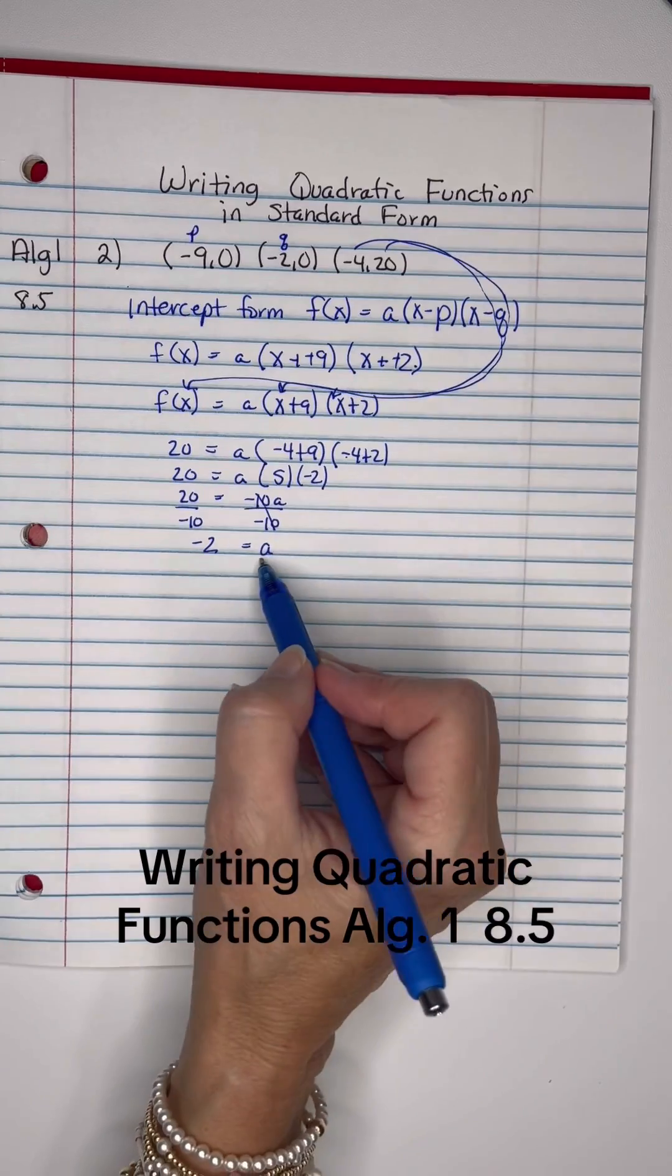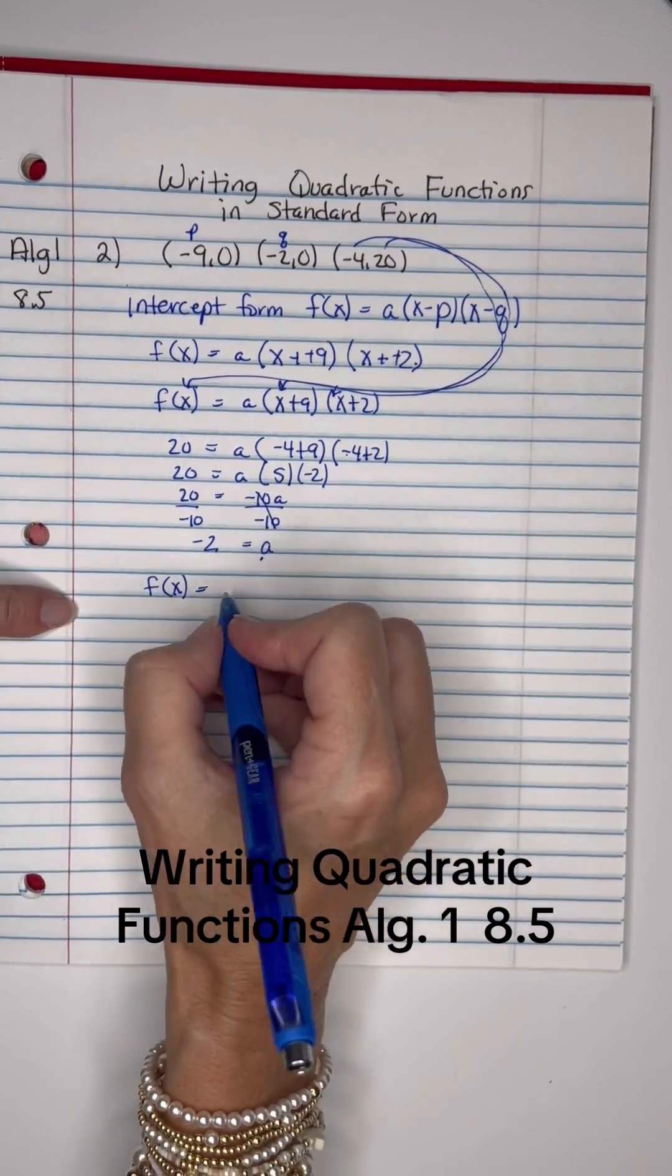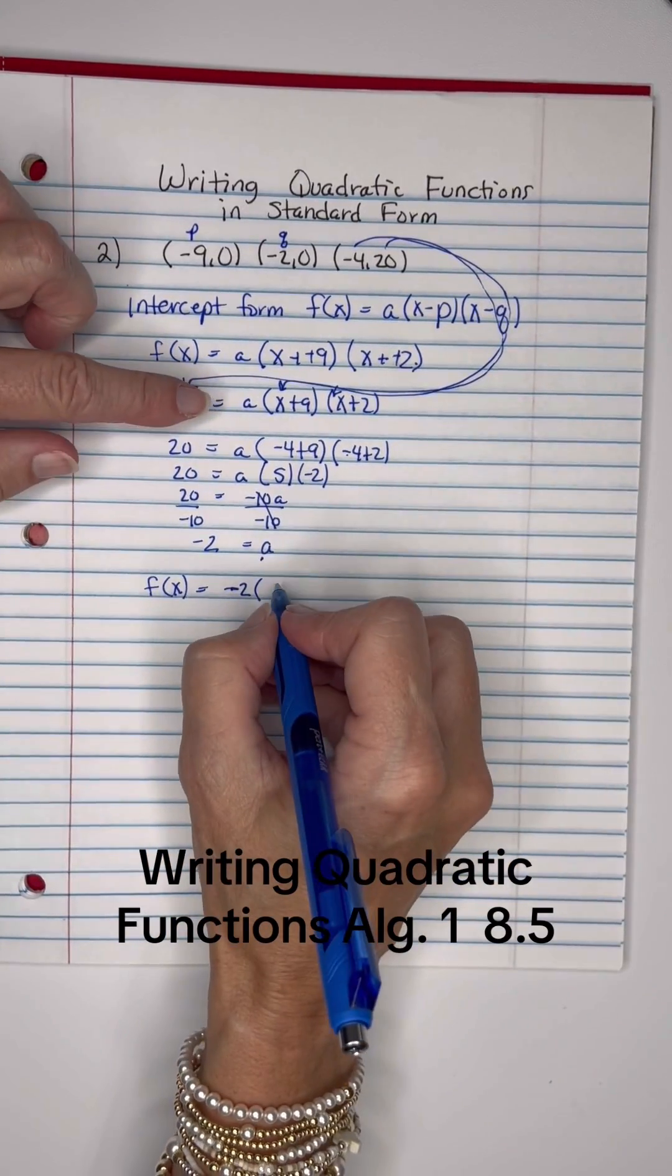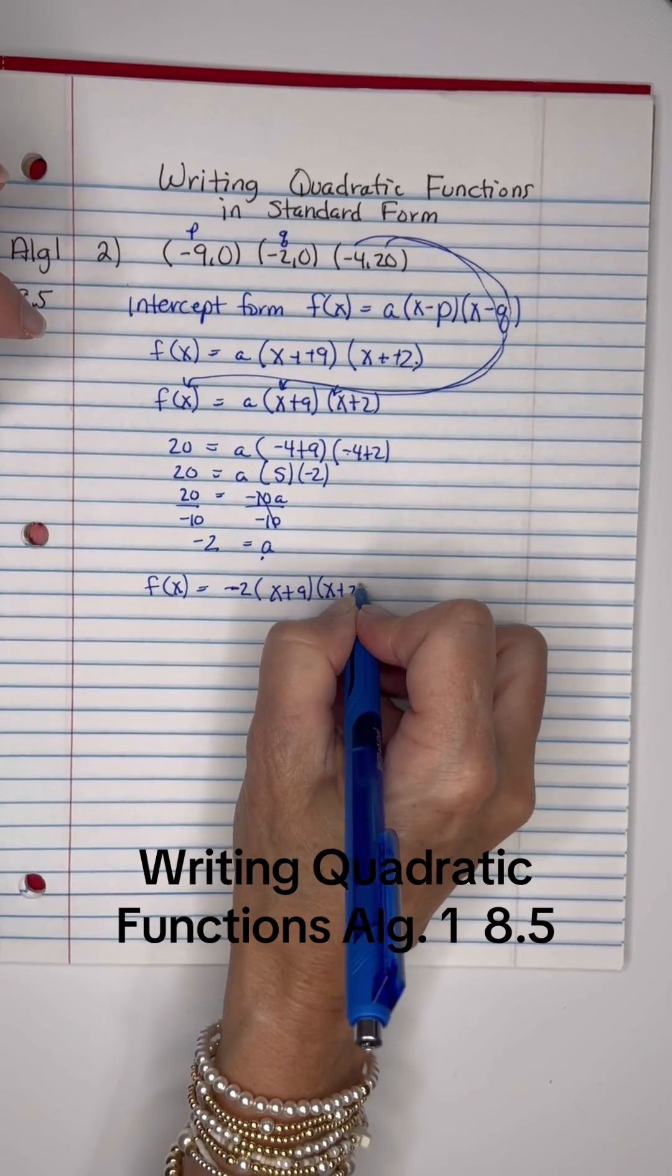So I have the formula and now I have the a. Our final answer would be f(x) equals negative 2 times (x + 9) times (x + 2).